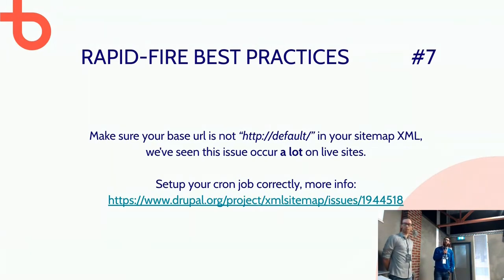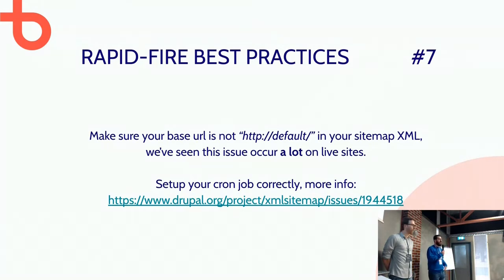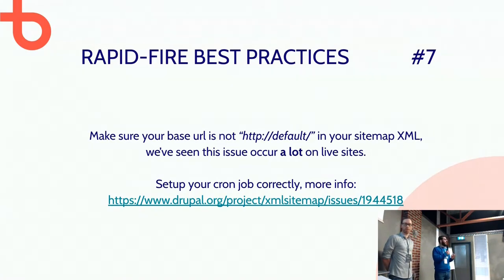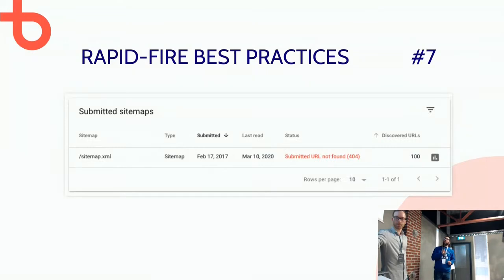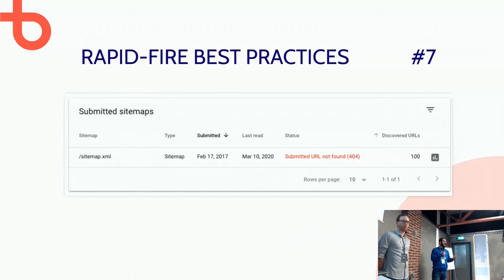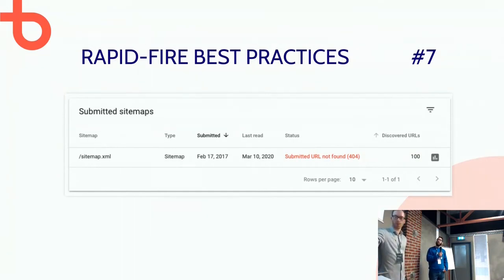Make sure your base URL is correctly configured. We've seen many instances where HTTP default ends up in the URL. It's best to set up the base URL correctly, or set up your cron jobs correctly so they use the correct URL. After going live, just check the sitemap — it takes five seconds and you'll know if things are correct.